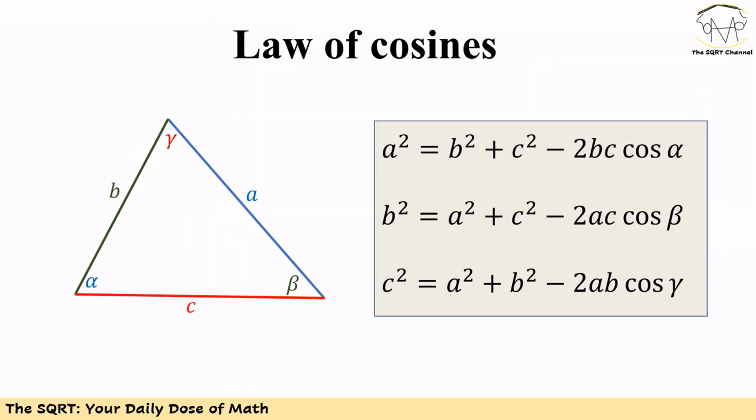To find cosine C, we use the law of cosines. For a triangle with sides a, b, and c and angles α, β, and γ, we write: a² = b² + c² - 2bc cos α.